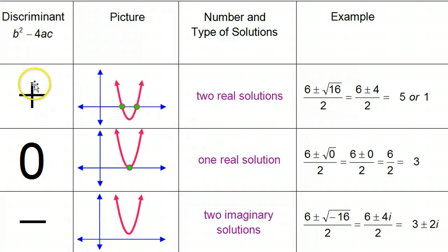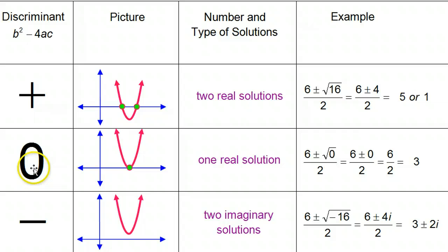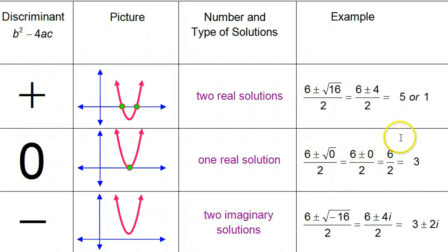So it makes sense that if the discriminant is any positive number — for example, imagine the discriminant was 16 — then I'd have six plus four and six minus four. Six plus four is ten, ten divided by two is five. Six minus four is two, two divided by two is one. So by adding four and subtracting four, I get my two different solutions: five and one. It makes sense, then, that if the discriminant is zero, that means I have zero under the radical. Where normally I would be adding and subtracting some number, adding and subtracting zero doesn't really change anything — six plus zero is six, six minus zero is six.